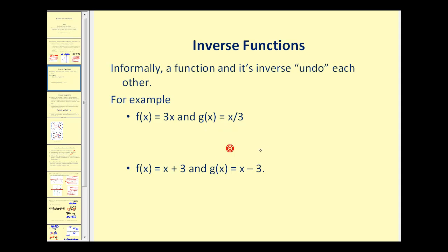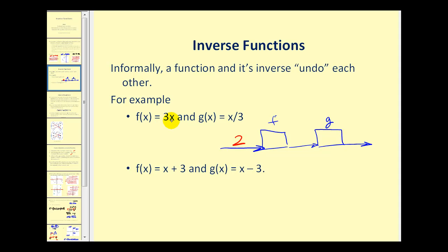You can think of this as a conveyor belt where we put an input in. When the input goes into f, the output is three times x — for example, three times two equals six. Now if this output becomes the input into g, and g divides by three, six divided by three gives an output of two. So these two functions undo each other because what we start with is the same thing we end up with.